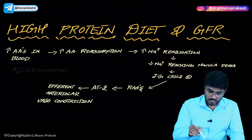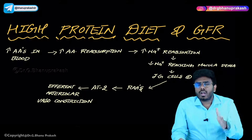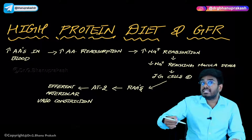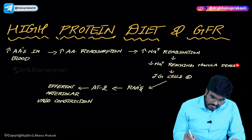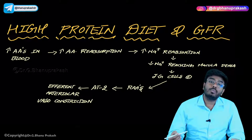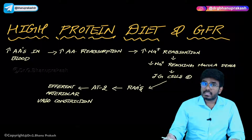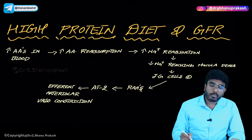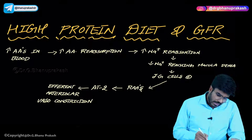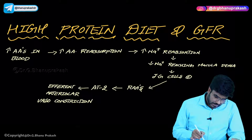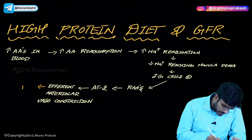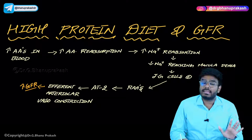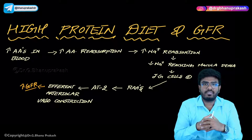Because so much sodium is being reabsorbed in the PCT along with the amino acids, the amount of sodium reaching the DCT is decreased. Less sodium reaches the macula densa, which interprets this as GFR falling. So macula densa stimulates the juxtaglomerular cells to produce renin, renin leads to angiotensin 2 production, and angiotensin 2 causes efferent arteriolar vasoconstriction, increasing GFR. Therefore, a person on a high protein diet will have an increased GFR.